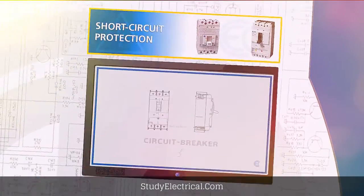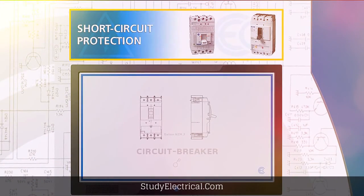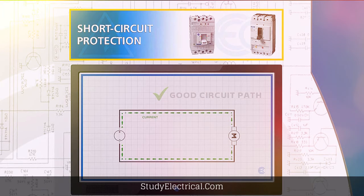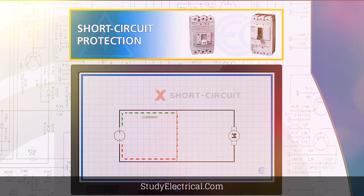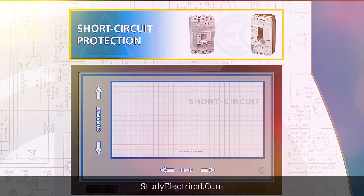On the other hand, we have short circuit protection. A short circuit occurs when current travels along an unintended path, often where essentially no or very low electrical impedance is encountered. Short circuit protection is protection against excessive currents or current beyond the acceptable current rating of equipment, and it operates instantly.